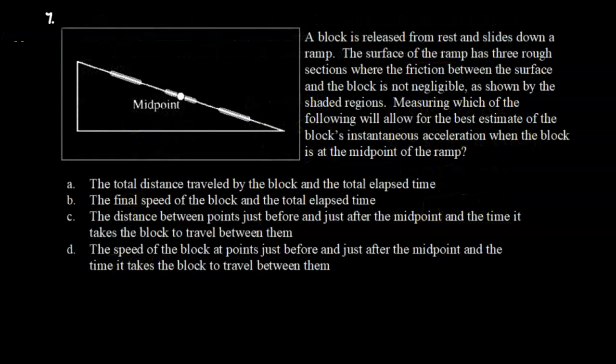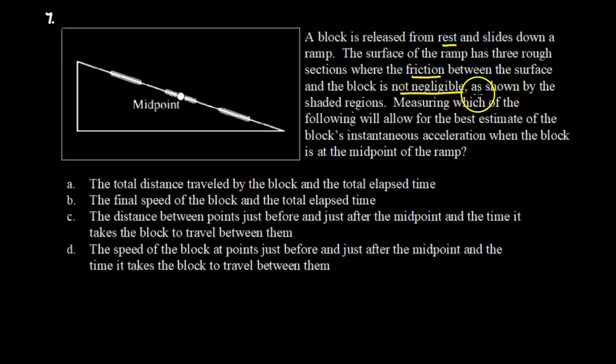Question 7. A block is released from rest and slides down a ramp. The surface of the ramp has three rough sections where the friction between the surface and the block is not negligible. As shown by the shaded regions. Measuring which of the following will allow for the best estimate of the block's instantaneous acceleration when the block is at the midpoint of the ramp. So we want to remember that the average acceleration is the change in velocity over the change in time. Which we can also write as V final minus V initial divided by T final minus T initial. Okay. And the instantaneous acceleration. Even though the acceleration is changing, this average will occur in between the initial and the final velocity.